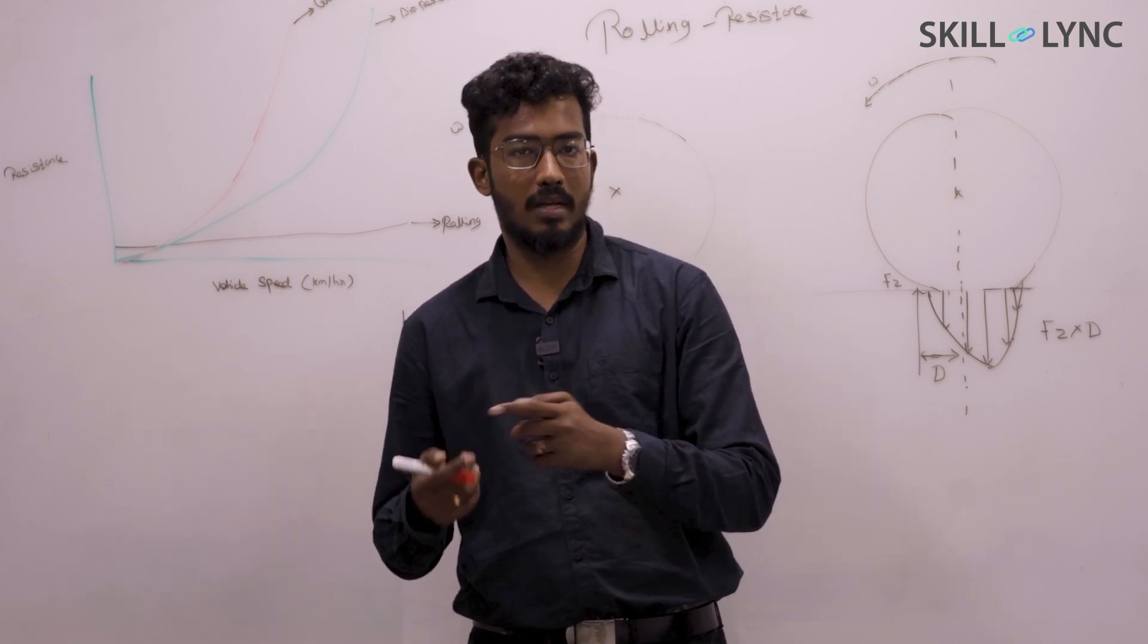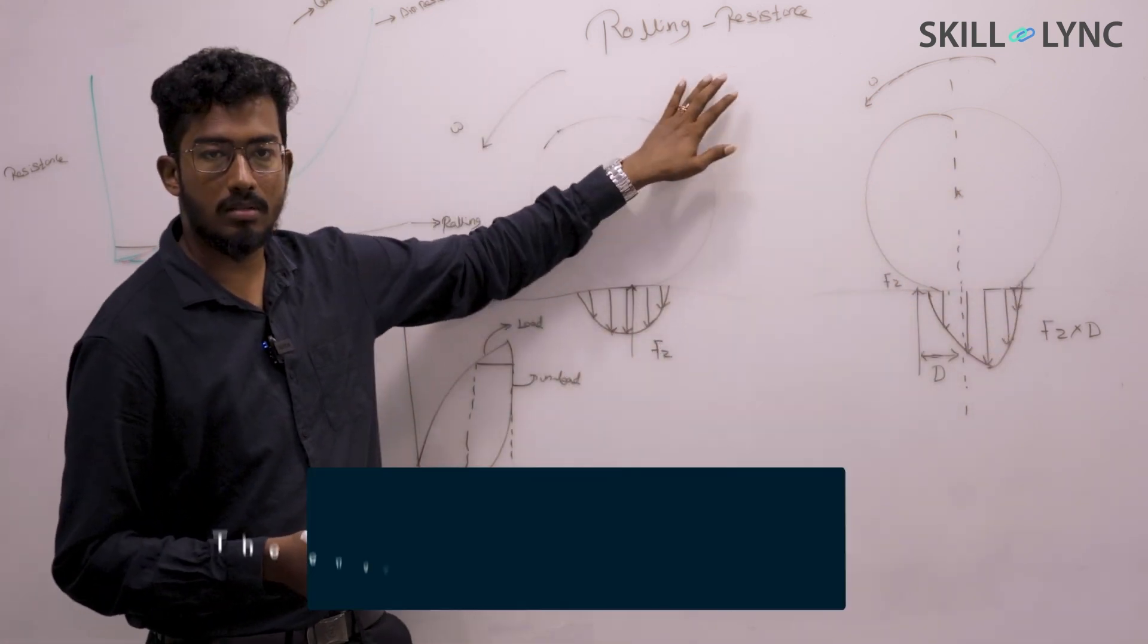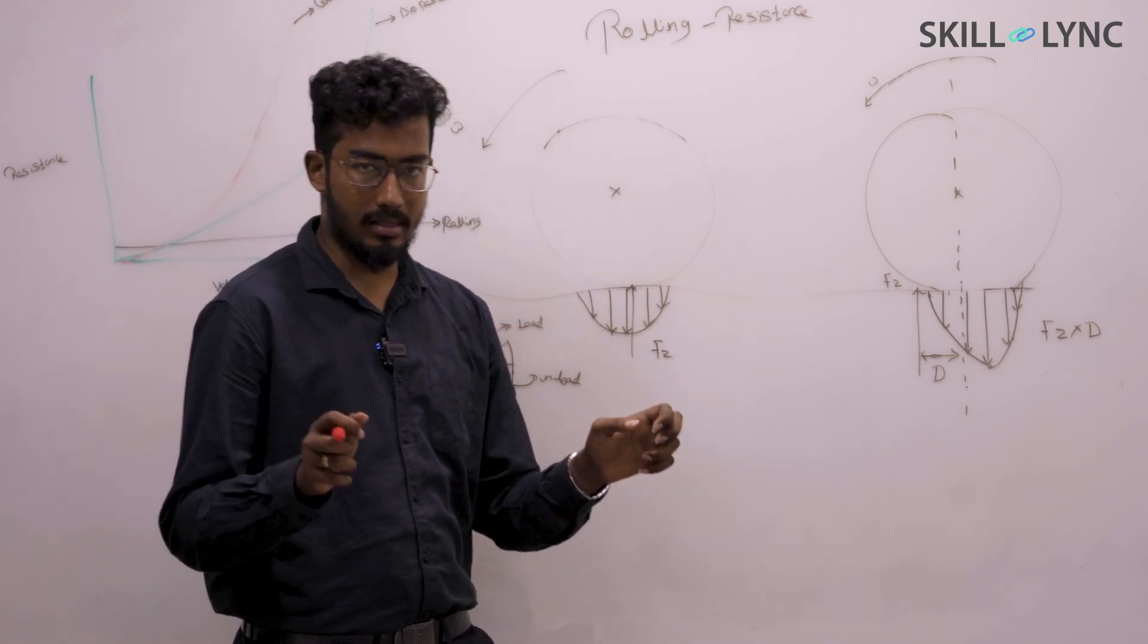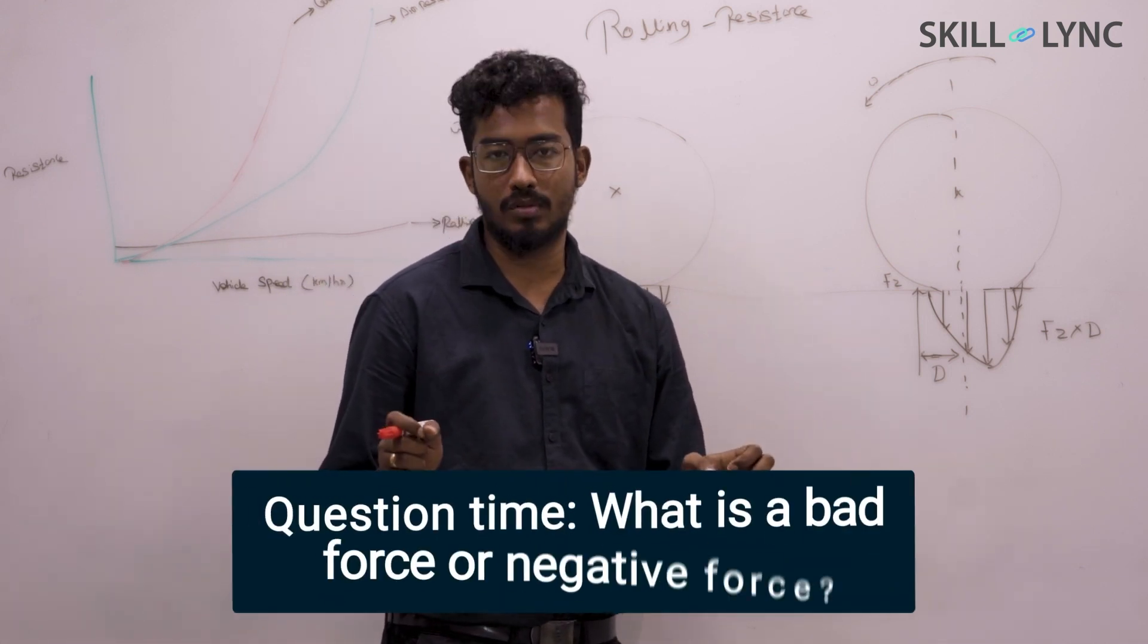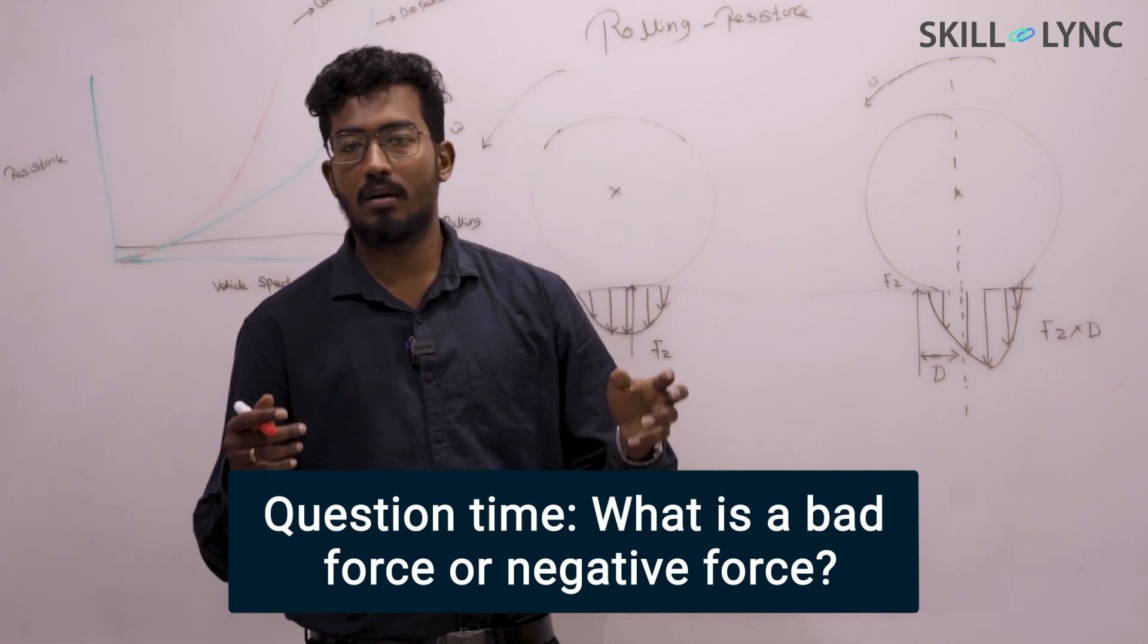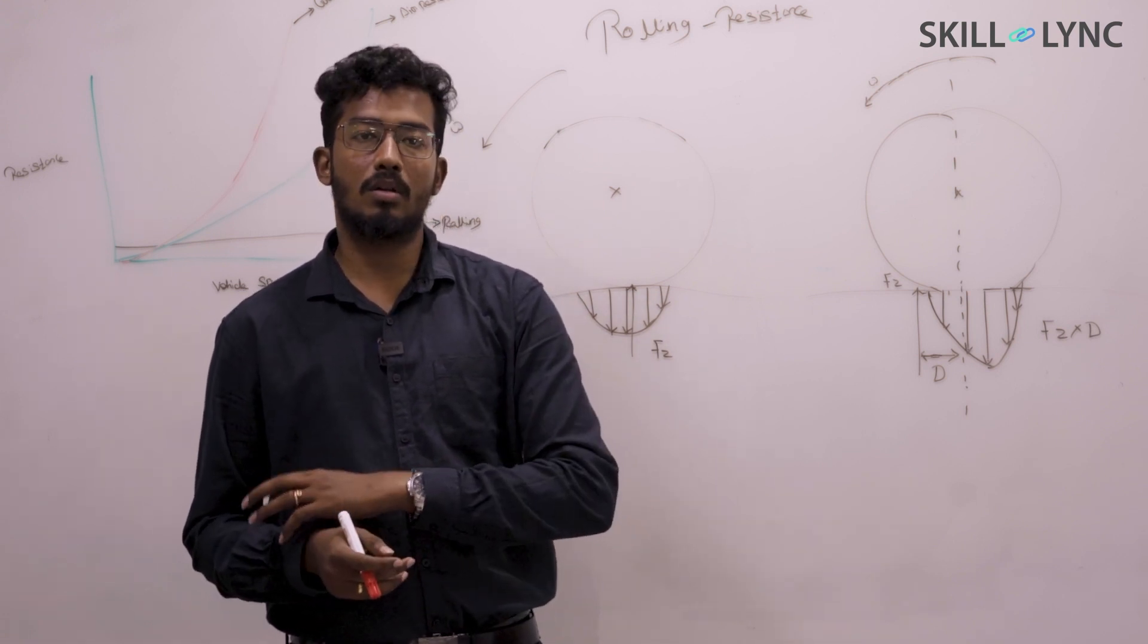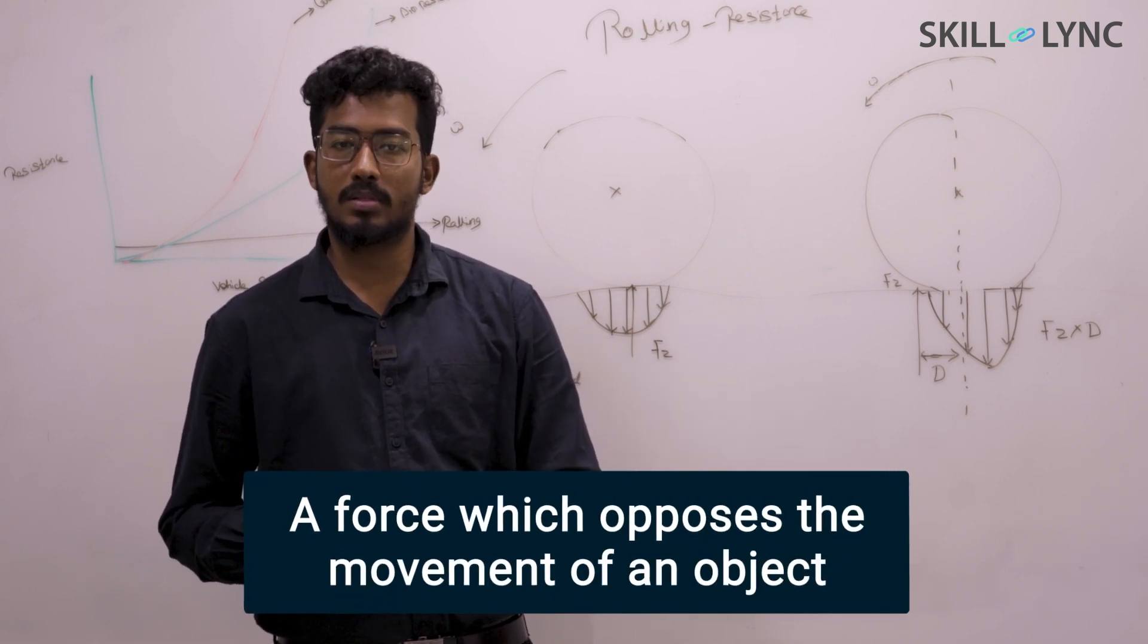The engineering concept is what we are going to talk about today—that is rolling resistance. What rolling resistance contributes is a resistance. When I say resistance, it's called a bad force. Any force that opposes the motion of the thrust or the locomotive we consider as a bad force. Why? Because it's going to oppose the direction, and in turn we are going to lose the purpose.